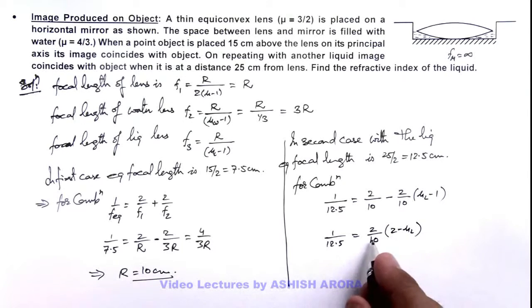And further if we simplify this here we can see, this will be 10 is equal to 25 multiplied by 2 minus μ_l. So on simplifying the value of μ_l we are getting is 8/5, that is the final result of this problem.